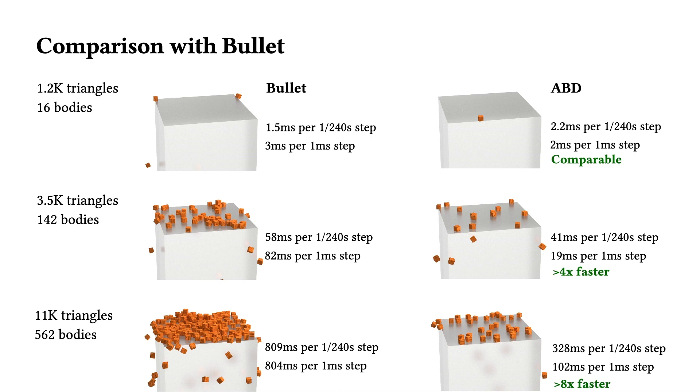For the smallest example, we see that ABD and Bullet have comparable timings. But as we scale to the larger scenes, ABD begins to outperform Bullet with up to 8 times speedup.